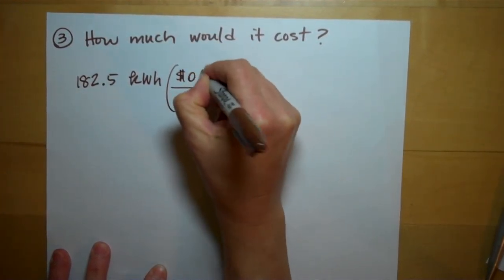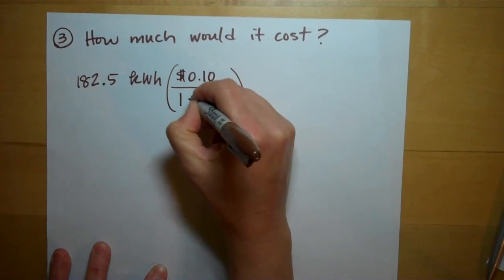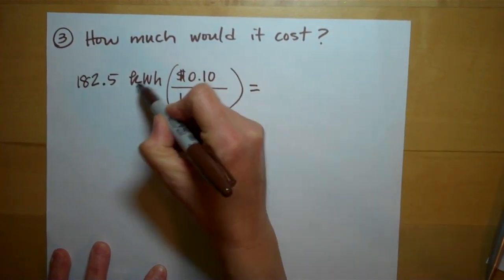We have to pay $0.10 for every one kilowatt-hour we use. Kilowatt-hours cancel.